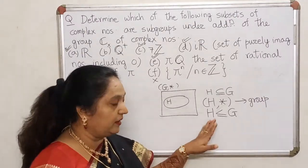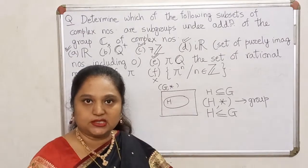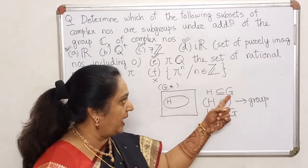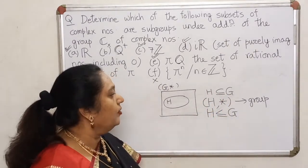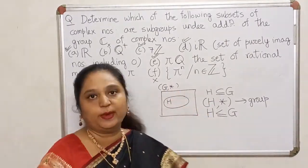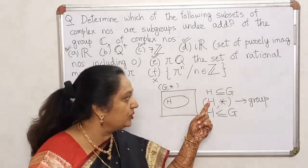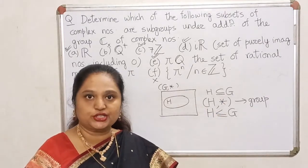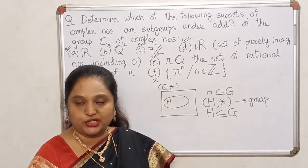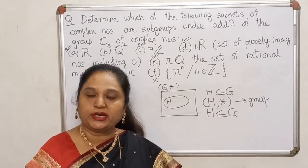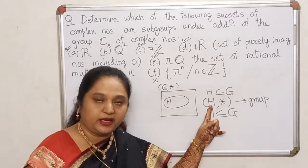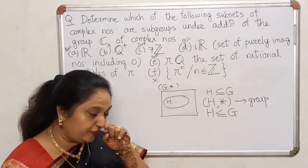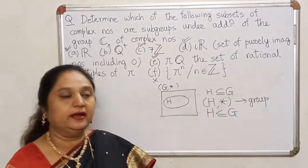So if I have to go by the definition of a subgroup, in order to prove that something is a subgroup, I must firstly ensure that it's a subset of the given group. And we will have to prove that with respect to the same operation as in G, H will become a group. Which means I will have to prove that all four properties are satisfied: first, star should be a binary operation on H (closure property); second, associative property should be satisfied in H; there should be an identity in H; and for every element in H, the inverse also must exist inside H.